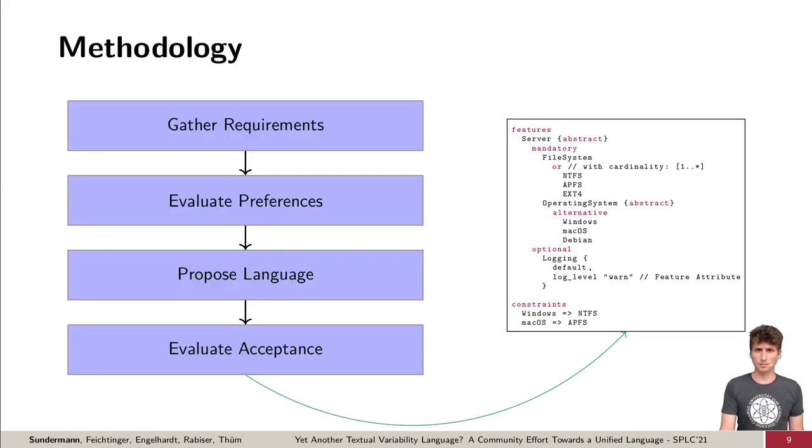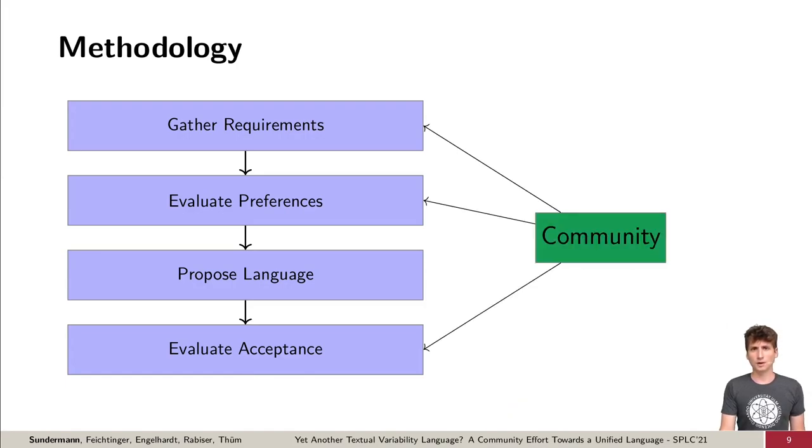In the following, I will present the development process of UVL separated in four phases. In the vast majority of the development, the feedback and the input of the community was and is incorporated. First, we gathered requirements based on previous work on designing languages. Second, we evaluated the preferences of the community on those identified concepts. Third, we proposed two language variants for further evaluation. And fourth, we evaluated which variant is preferred and how well it is accepted.